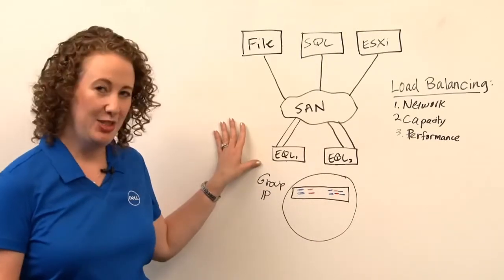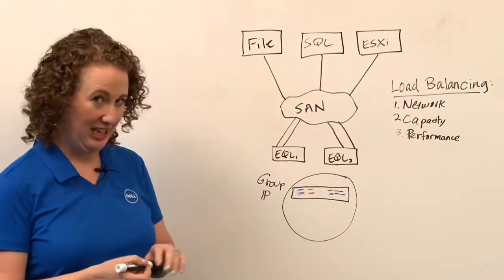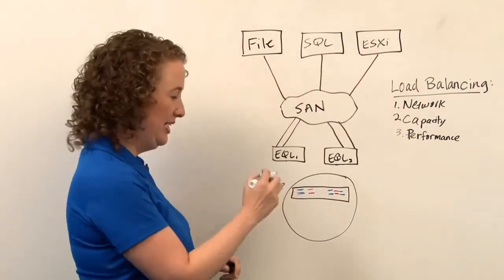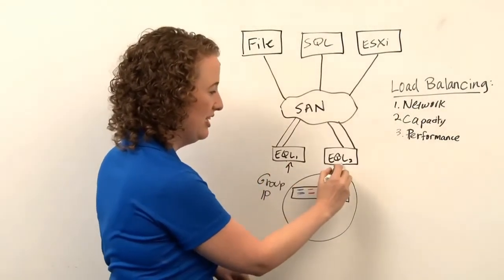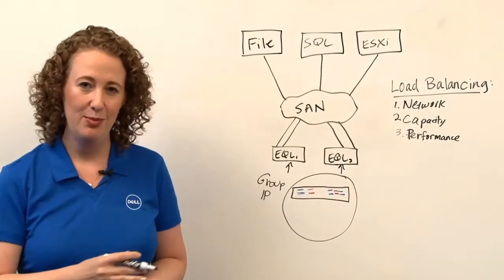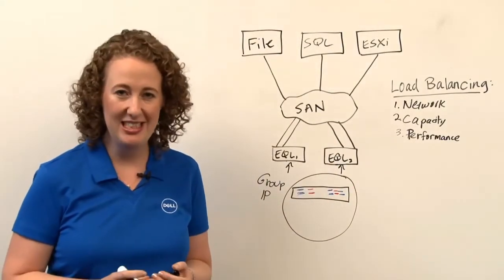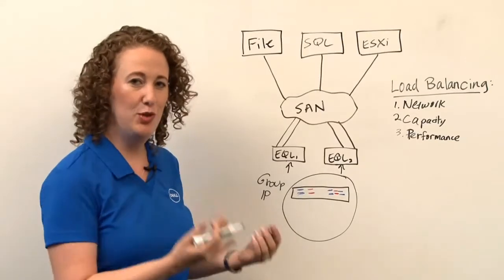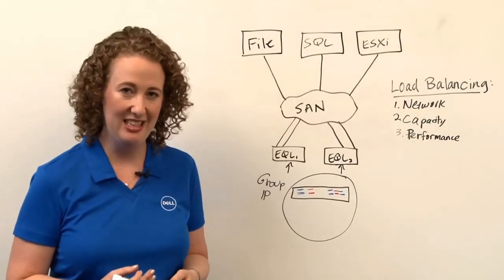Going back to our diagram here, let's say that over time, both of these arrays began to show high latency. This would be an indicator that they're overloaded. Perhaps the workload grew by more than we expected, or perhaps we had some new requirements put on the SAN that we didn't anticipate in the beginning.